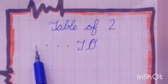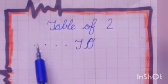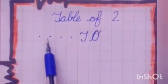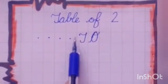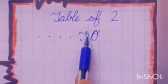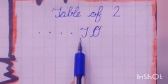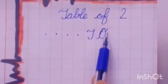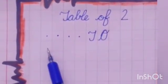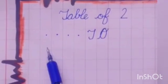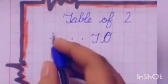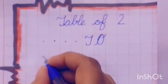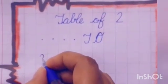For this, we will leave four boxes. And in the next box, we will write T. And after this, we will write O. After this, we will leave one box. Write 2.